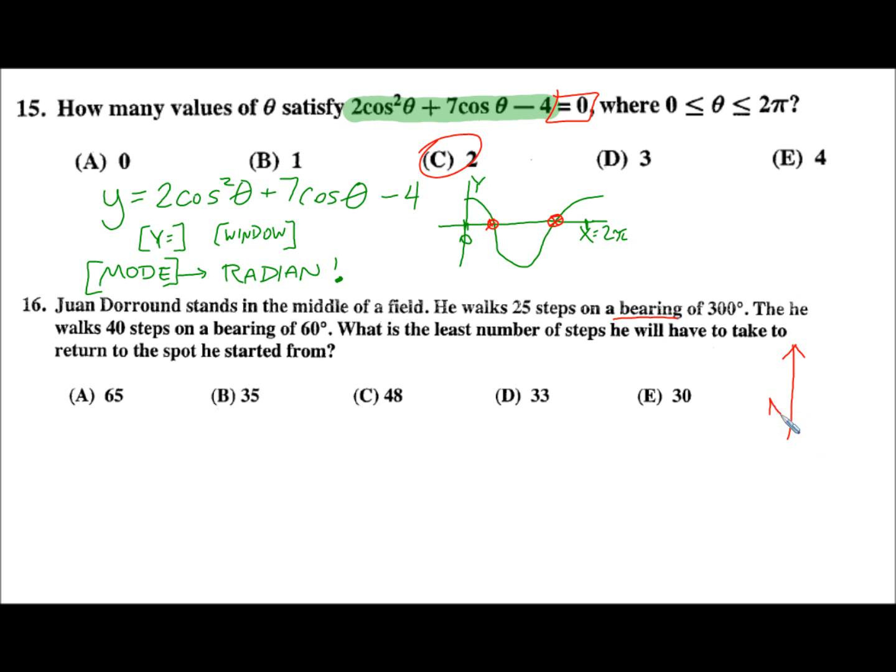So that would lead to the conclusion due east is 90 degrees, and so on and so forth. He's standing in the middle of the field. Let's make him stand in the middle of the field. 25 steps on a bearing of 300 degrees. So due west would be 270. 300 would be, so he's actually walking this path. 300 degrees, this makes a 30 degree angle with due west. 25 steps that way.